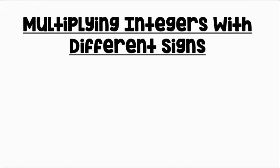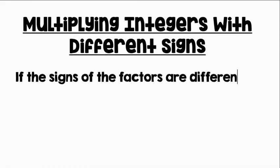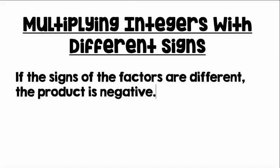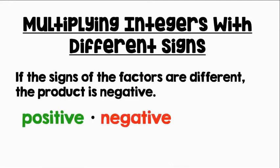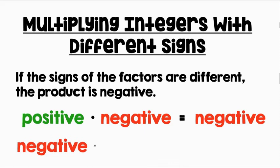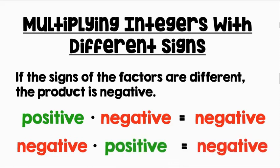Let's review our rules for multiplying integers with different signs. If the signs of the factors are different, the product is negative. For example, a positive times a negative equals a negative, and a negative times a positive equals a negative.